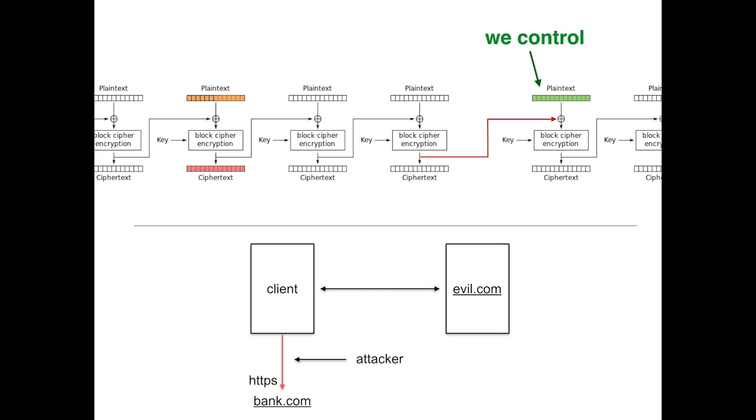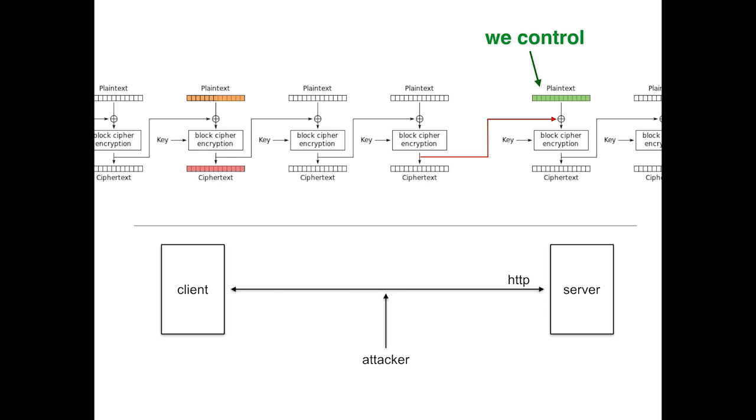So it's not totally crazy to be able to think that we're able to control some plaintexts on the victim side. And that allows us to do this chosen plaintext kind of attack. So there are different ways to do this attack, and an easier way, if you're man in the middle with the client entirely, is to just wait for the client to visit an HTTP website, so an insecure website, and to inject some of your JavaScript that will allow the client to make some queries to bank.com, and you can control those queries.